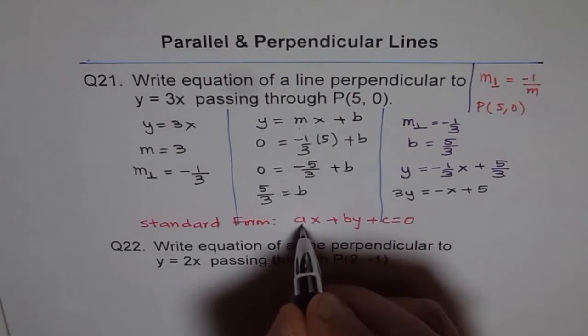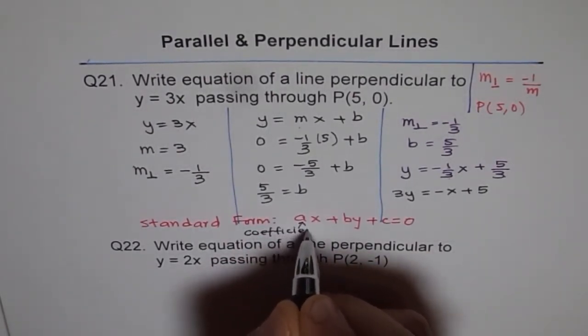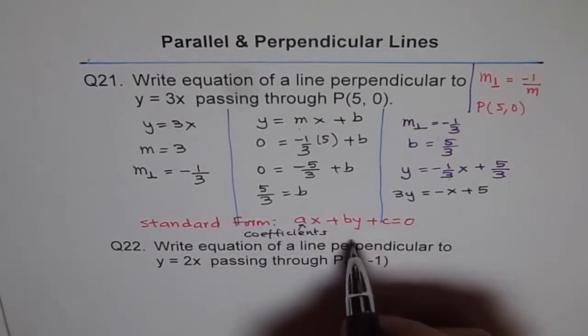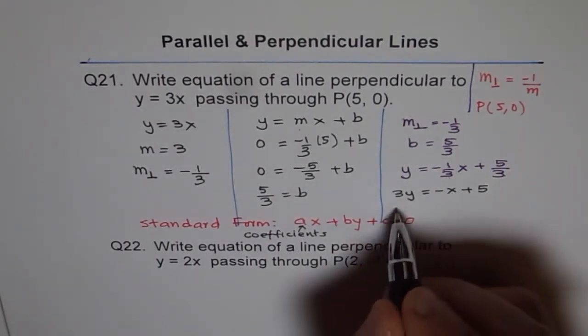What are these called? Coefficients. C-O-E-F-F-I-C-I-E-N-T-S. Coefficients. This is coefficient of x. This is b's coefficient of y.